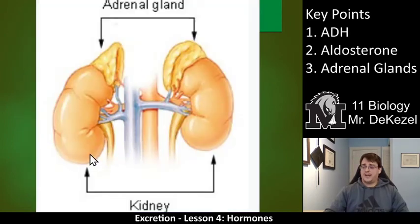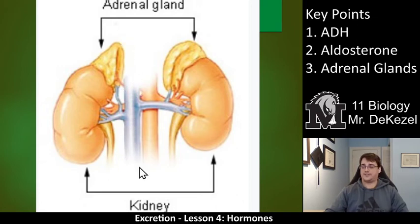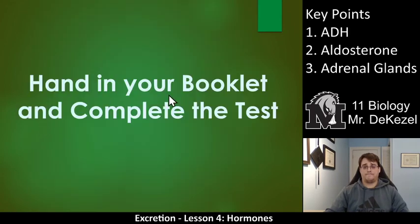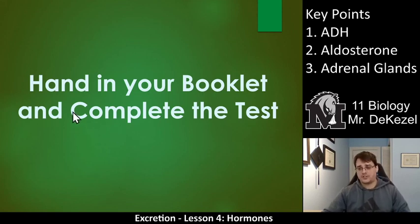We have the adrenal glands with our bean-shaped kidneys, our aorta, renal artery, renal vein, and inferior vena cava back up to the heart — those are the main portions of the urinary system. If you have any questions please let me know, study up, hand in your booklet, and complete the test. Thanks very much for watching everyone — short lesson, under six minutes. Thank you.